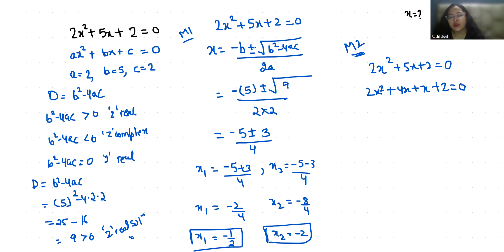Now from first 2 terms if I take 2x as common, so x + 2. If 1 is common, x + 2 = 0. Now x + 2 is common, so 2x + 1 = 0.